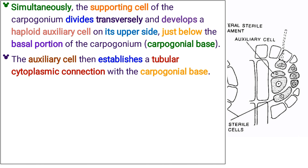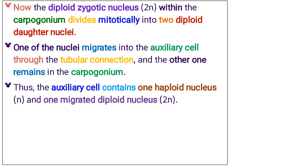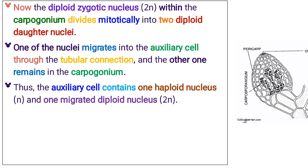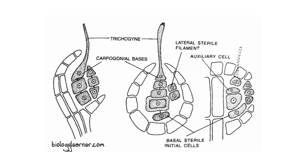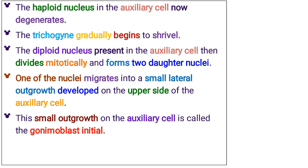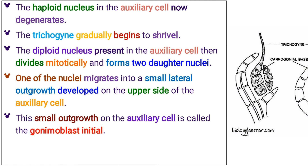The auxiliary cell then establishes a tubular cytoplasmic connection with the carpogonial base. The diploid zygotic nucleus within the carpogonium divides mitotically into two diploid daughter nuclei. One of the nuclei migrates into the auxiliary cell through the tubular connection, and the other remains in the carpogonium. Thus, the auxiliary cell contains one haploid nucleus and one migrated diploid nucleus. The haploid nucleus in the auxiliary cell now degenerates. The trichogyne gradually begins to shrivel.